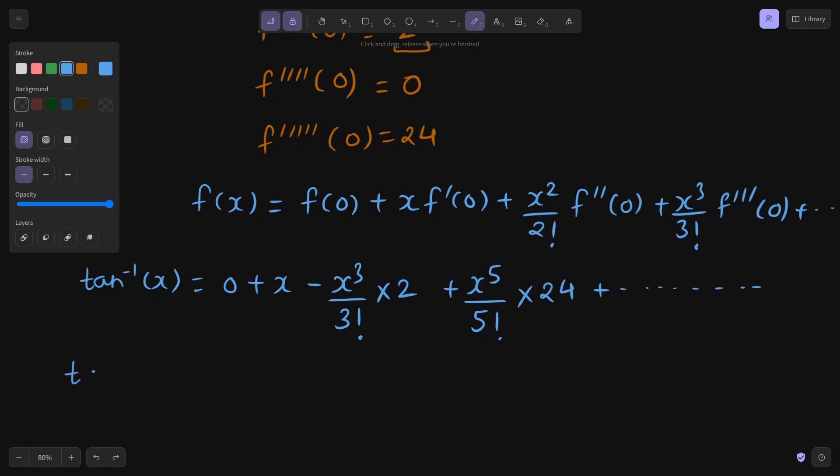Now if I try to write it more cleanly I would write this as x, 3 factorial is 6 so I will get 3 in denominator so minus x³ by 3 and next I will get x power 5 by 5 factorial is 120 which is 24 into 5 so I will get 5 in denominator. So this is what I am getting as my expansion you are getting some pattern out here. Whatever is the power of x first of all power is 1, 3, 5, 7 and so on. We are skipping the even numbers.